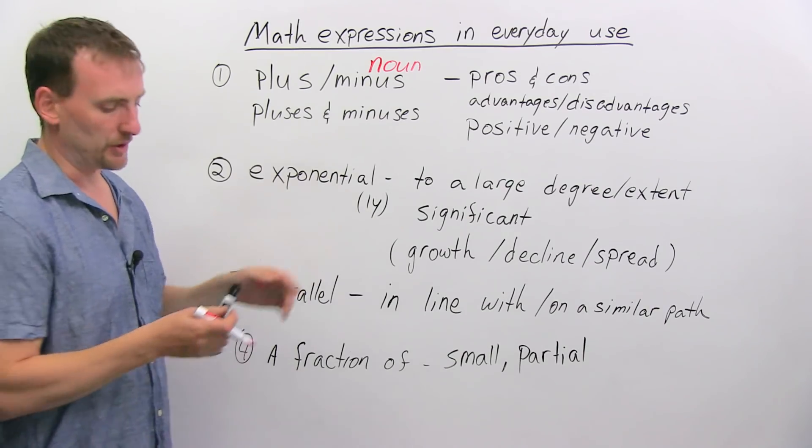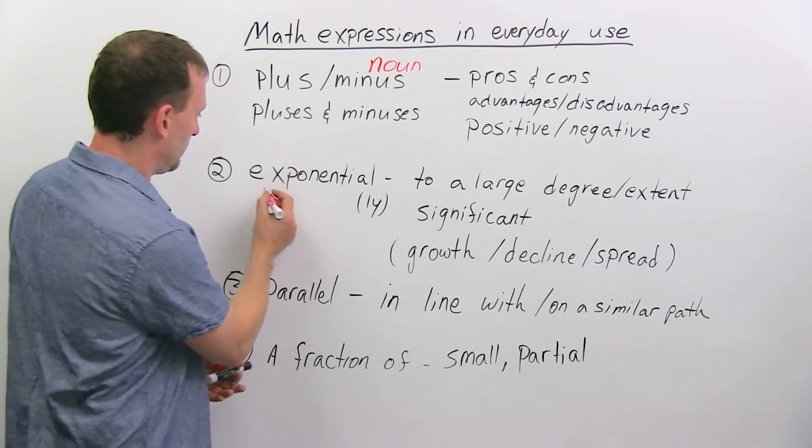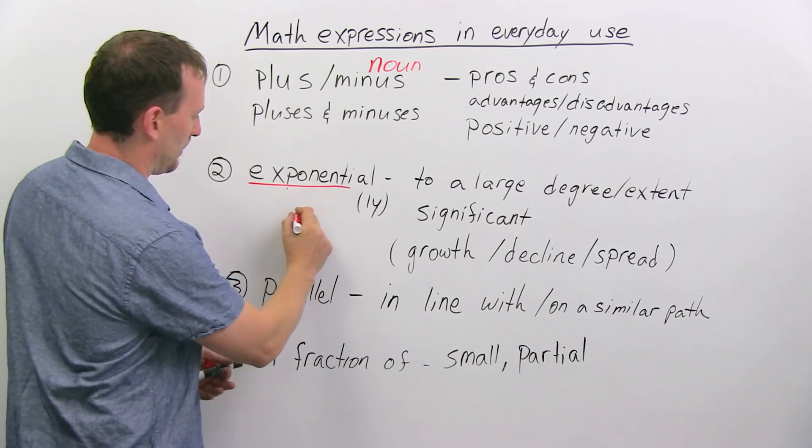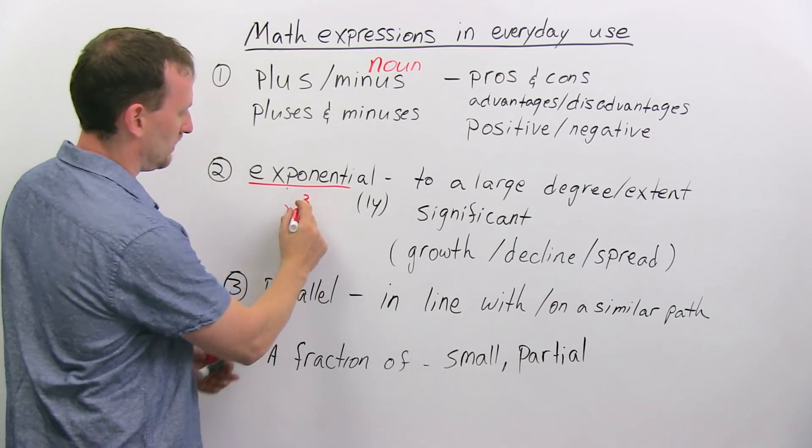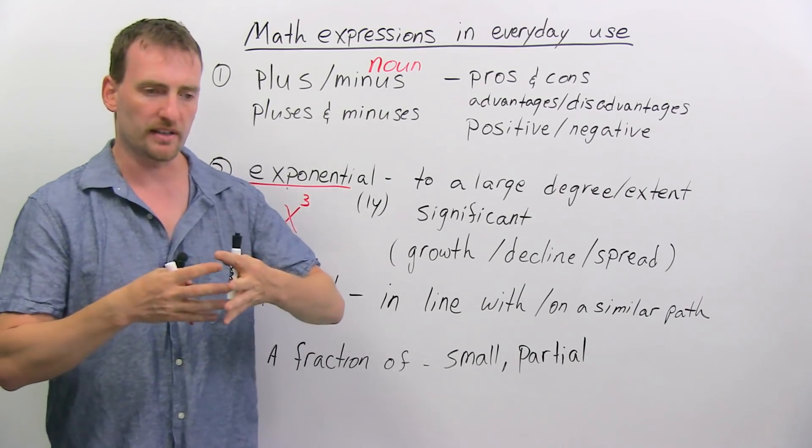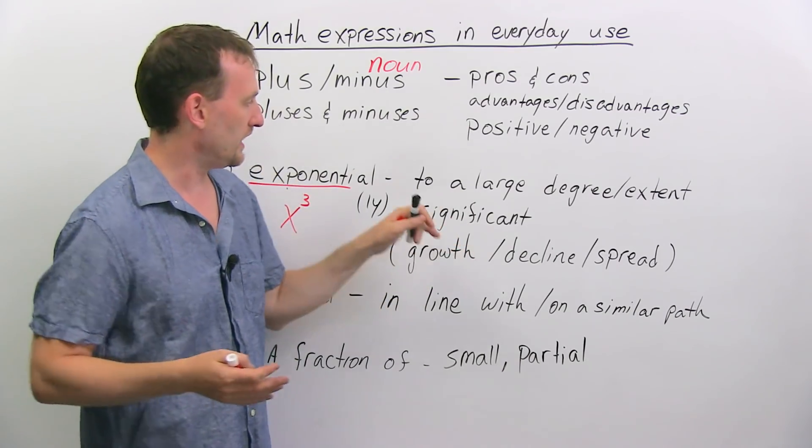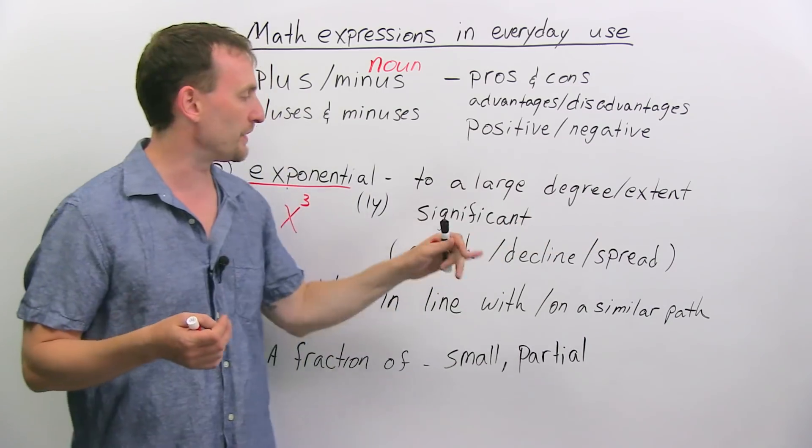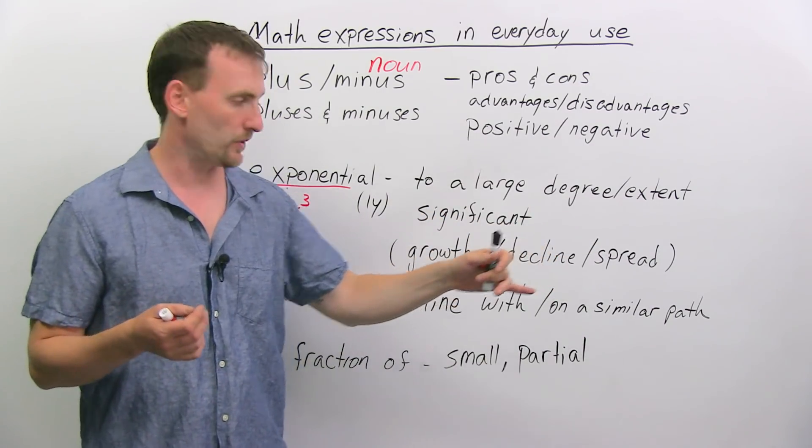Exponential. Exponential comes from exponent. You might know this as, like, this is an exponent, but when we talk about exponential, we're talking about it to a very large degree. So to a large degree or to a large extent, something that is significant.